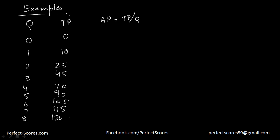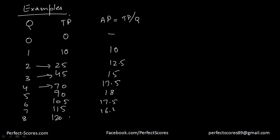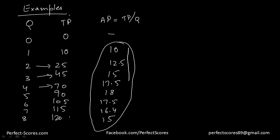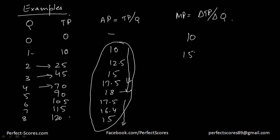Average product is total product divided by the quantity of variable factor. So we get 10, 12.5 (that is 25 by 2), 45 by 3 is 15, 70 by 4 is 17.5, then 18, then 17.5 again, then 16.4, then 15. The average product is increasing, reaches its maximum value, and after that it starts to diminish. The same happens with marginal product — which is the change in total product divided by the change in the variable factor. We get 10, 15, 20, 25, then 20, 15, 10, 5. The marginal product reaches its maximum value and after that it eventually diminishes.